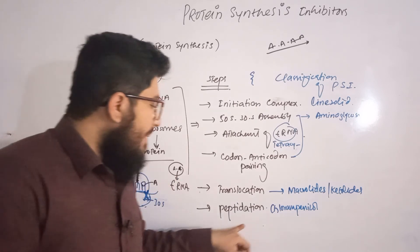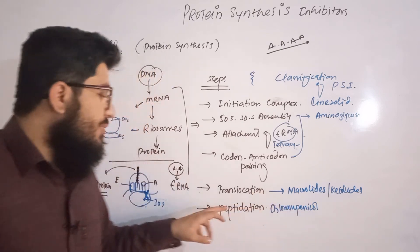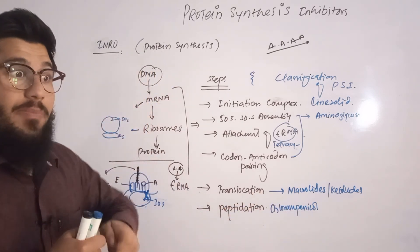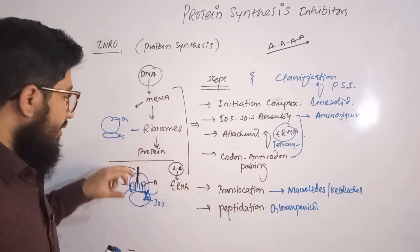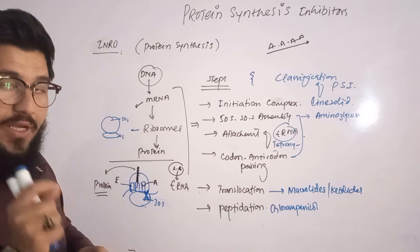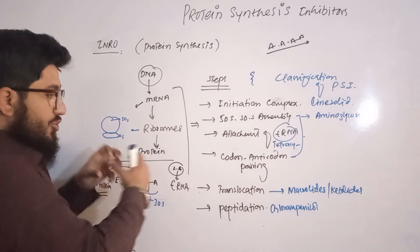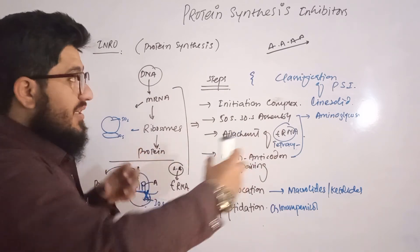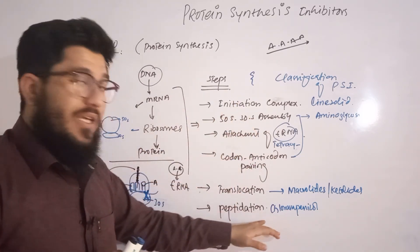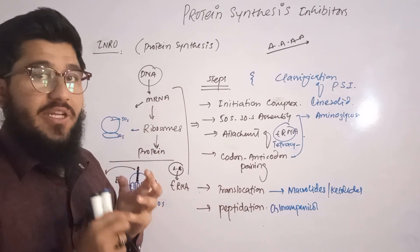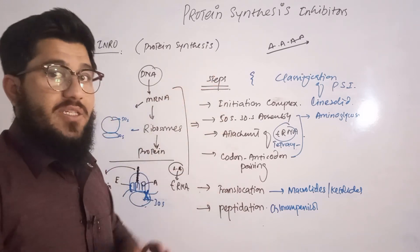For peptidation, we have chloramphenicol. Chloramphenicol inhibits transpeptidase — the enzyme responsible for chaining amino acids together to produce peptides and polypeptides. By inhibiting this enzyme, chloramphenicol inhibits peptide synthesis, and therefore inhibits overall protein synthesis.